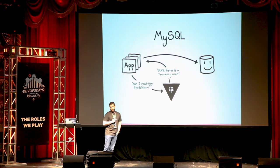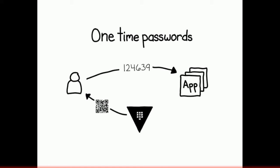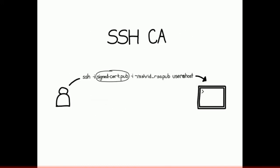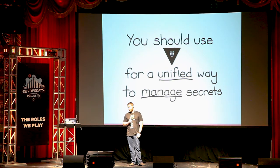Some use cases people use Vault for: MySQL — you have an application, and instead of giving it a static username and password to speak to your database, you can have Vault generate a username just for it that's temporary and gets removed automatically. If you're using one-time passwords in your application, Vault can manage that process for you, including two-factor login capabilities for your website. An SSH certificate authority — this will allow your administrators to log in to remote servers using signed certificates, so Vault will act as your certificate authority. You should use Vault for a unified way to manage your secrets in your organization.